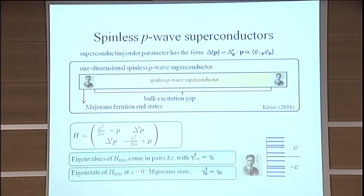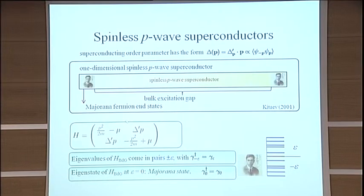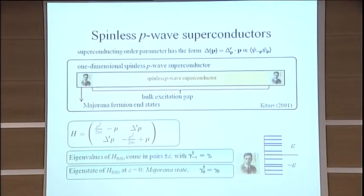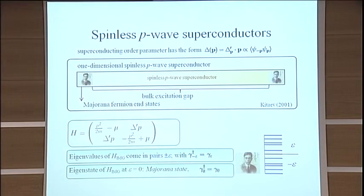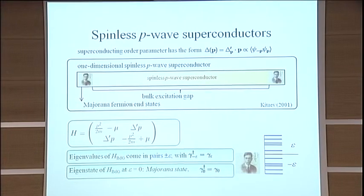And the off-diagonal part is your superconducting order parameter, which in a p-wave superconductor is proportional to the momentum P. You can also see that this is spinless, there are no Pauli matrices in there, this is just electrons and holes. And then the Majorana state, if it is there, is an excitation for which the creation operator is equal to the annihilation operator. And such an excitation happens at zero energy.